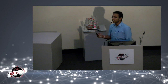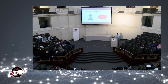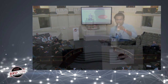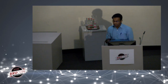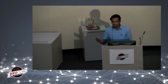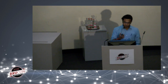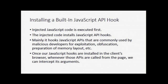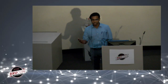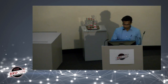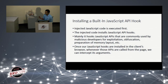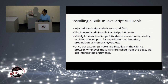The injected code is executed first as the hook installation code. It installs JavaScript API hooks — mainly hooking JavaScript APIs commonly used by browser exploit developers for obfuscation, exploitation, and related tasks. Once installed, whenever these APIs are called from the normal page, we intercept them and check whether any suspicious behavior is detected. This screenshot from a proxy shows the normal page with a tiny piece of injected JavaScript code at the top.